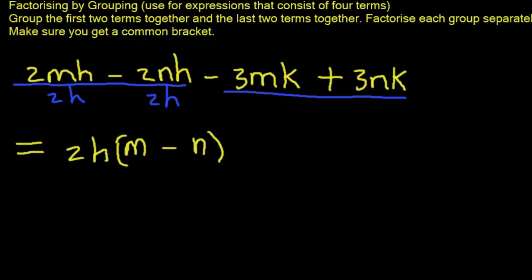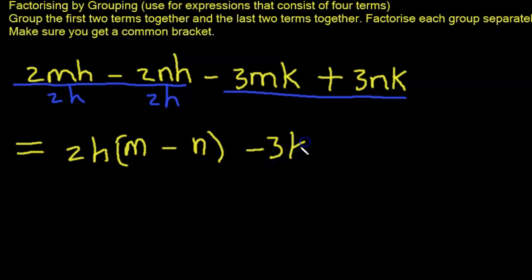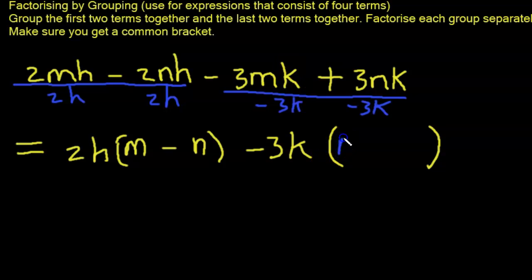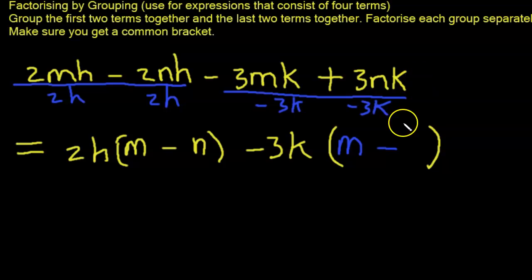For the other pair, the common factor: K is common, but the group begins with minus 3, so we take out minus 3K. We divide both terms by minus 3K. So minus 3 into minus 3 gives positive 1, and K into K gives 1, leaving positive M. For the next term, 3 divided by negative 3 is negative 1, and K into K gives 1, leaving minus N. So the second group factors to minus 3K(M minus N).